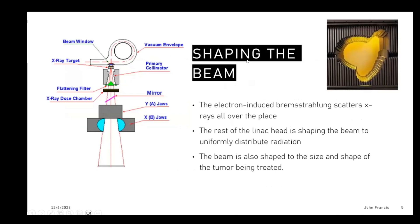The next step is shaping the beam. Instead of having radiation spraying all over the room, they want a beam that's pointed and focused. First, there's a primary collimator — it's kind of like a funnel to get many of the photons going in a straight line. What I thought was really interesting is they also have multi-leaf collimators, which can very precisely shape that beam to any shape or size of tumor.